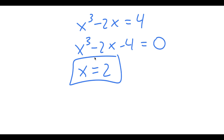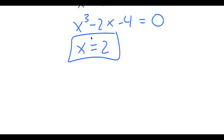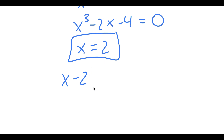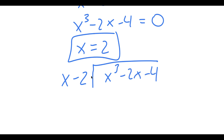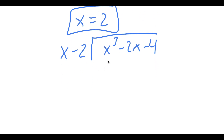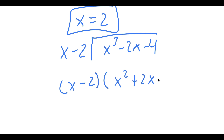And now using that solution, we can find the rest of the solutions by doing long division. x minus 2 equals 0 is a factor, so we divide our original equation x³ minus 2x minus 4 by x minus 2. If you do this, you end up getting x minus 2 times x² plus 2x plus 2 is equal to 0.